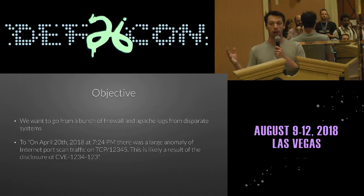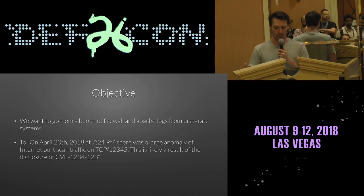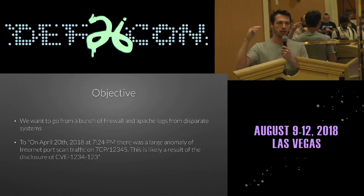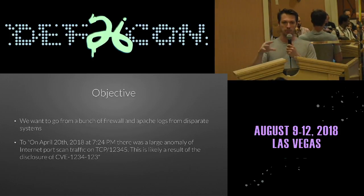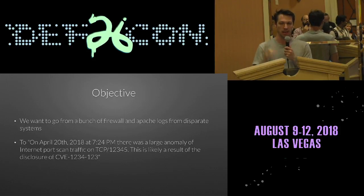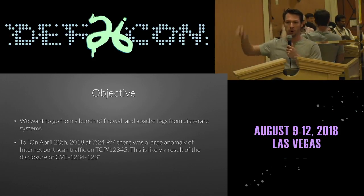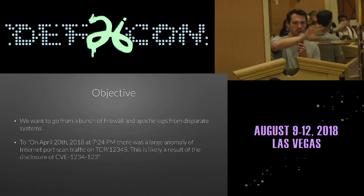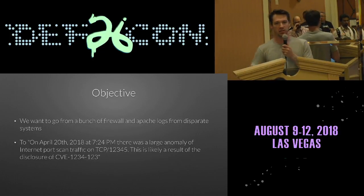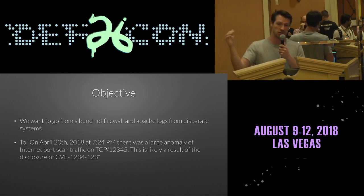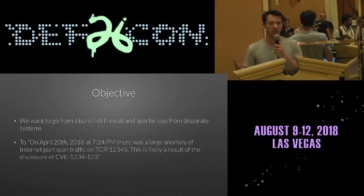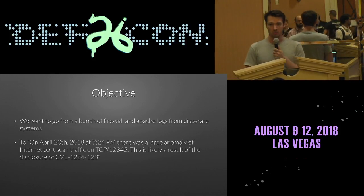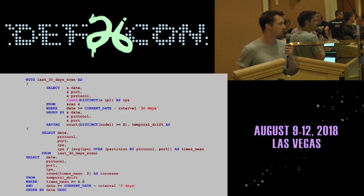Today I want to talk about the process of going from a bunch of firewall logs in disparate systems to some kind of anomaly indicator that can be correlated with an actual thing that makes sense — from a bunch of Apache and firewall logs across many systems to: 'Hey, at this time, in this place, there was a giant uptick in people scanning and probing for these things, and it probably had something to do with this vulnerability.' That's it, and the way I did it is with this giant-ass SQL query.